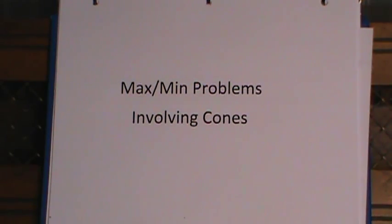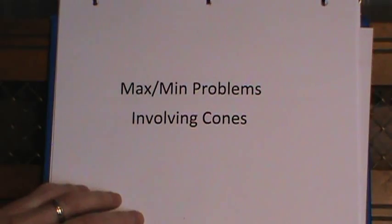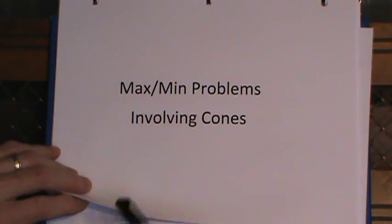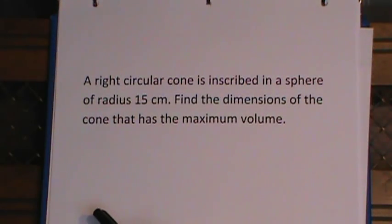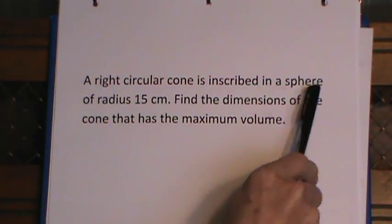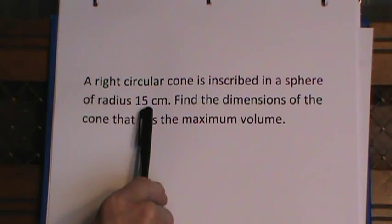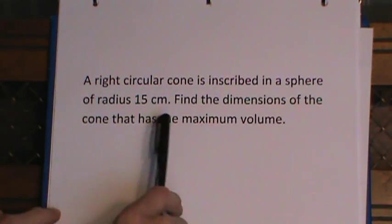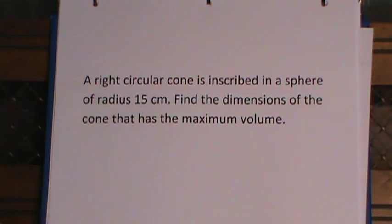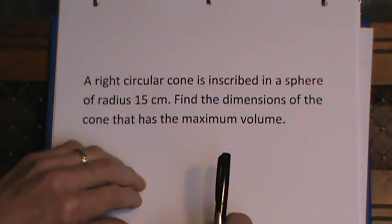In this video I'm going to look at three typical problems that one encounters when studying maximum minimum problems. These all involve cones. The first one is we have a right circular cone inscribed in a sphere with a given radius 15 centimeters, and we have to find the dimensions of the cone that has the largest volume that we can fit into this sphere.